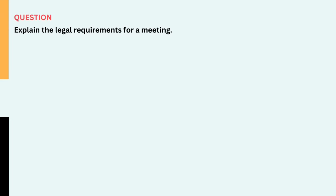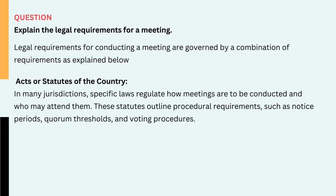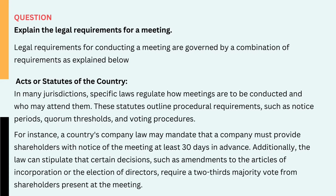Question: Explain the legal requirements for a meeting. Legal requirements for conducting a meeting are governed by a combination of requirements: 1. Acts or statutes of the country — in many jurisdictions, specific laws regulate how meetings are to be conducted and who may attend them. These statutes outline procedural requirements, such as notice periods, quorum thresholds, and voting procedures. For instance, a country's company law may mandate that a company must provide shareholders with notice of the meeting at least 30 days in advance. Additionally, the law can stipulate that certain decisions, such as amendments to the Articles of Incorporation or the election of directors, require a two-thirds majority vote from shareholders present at the meeting.